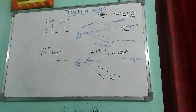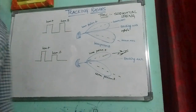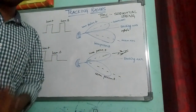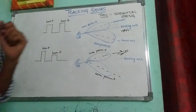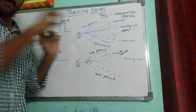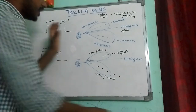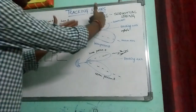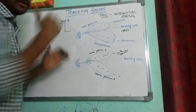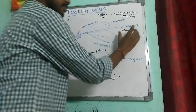What is sequential lobing? Sequential lobing is a technique wherein the direction of the beam of the antenna is switched between two different positions — position A and position B — along the tracking axis.